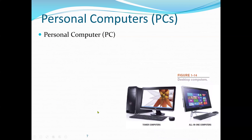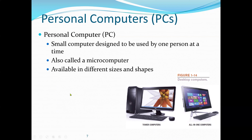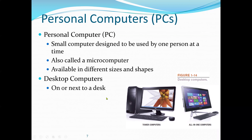Next are personal computers. Personal computers and mobile devices are general purpose computers — we can use them to perform different types of tasks. A personal computer is a small computer designed to be used by one person at a time, also called a microcomputer, available in different sizes and shapes. We have desktop computers that sit on or next to a desk, tower case computers, and all-in-one computers where the monitor and computer system are all built into one unit.